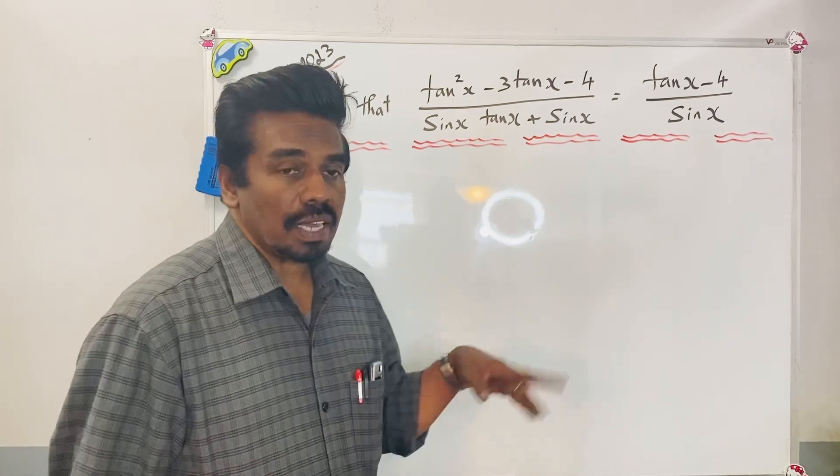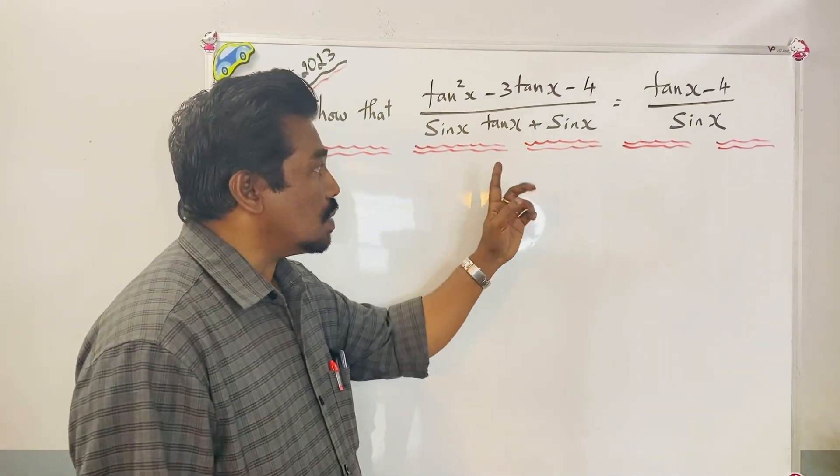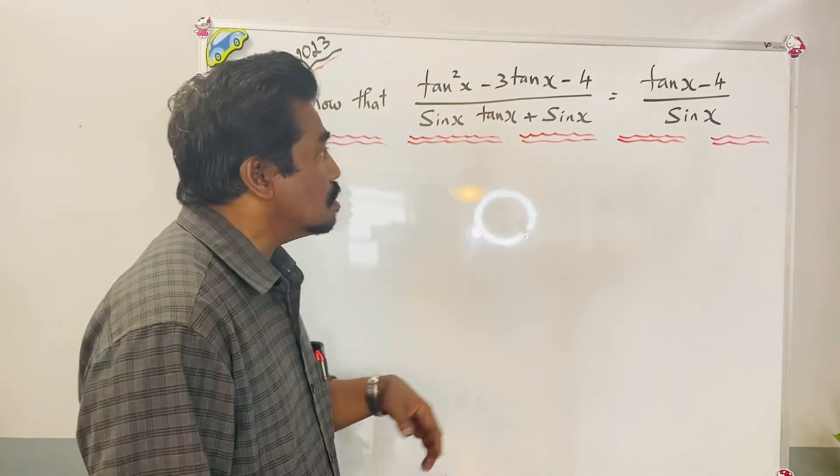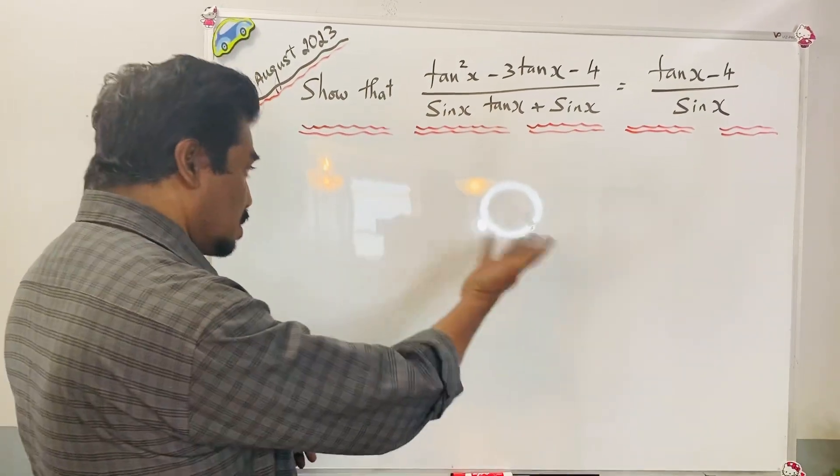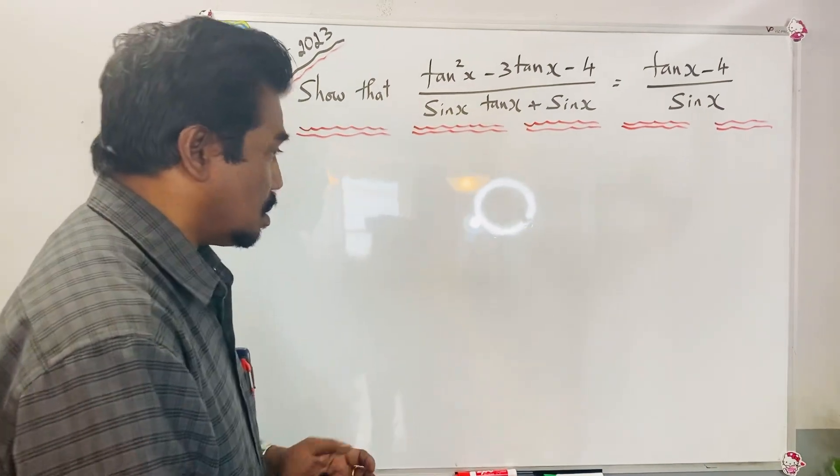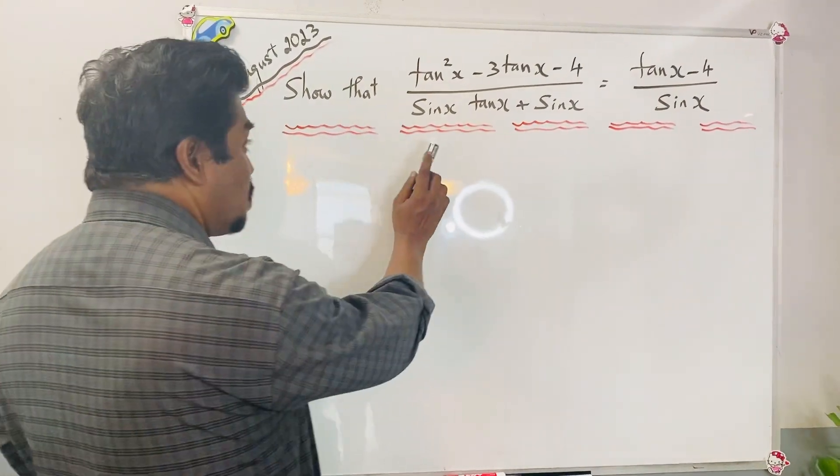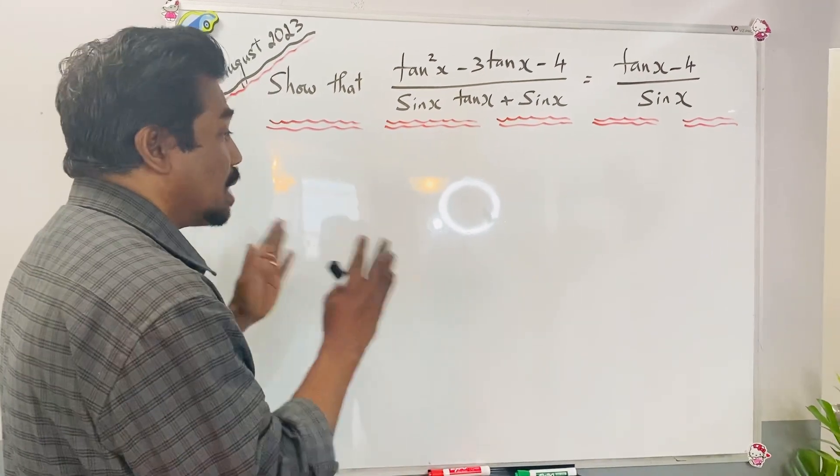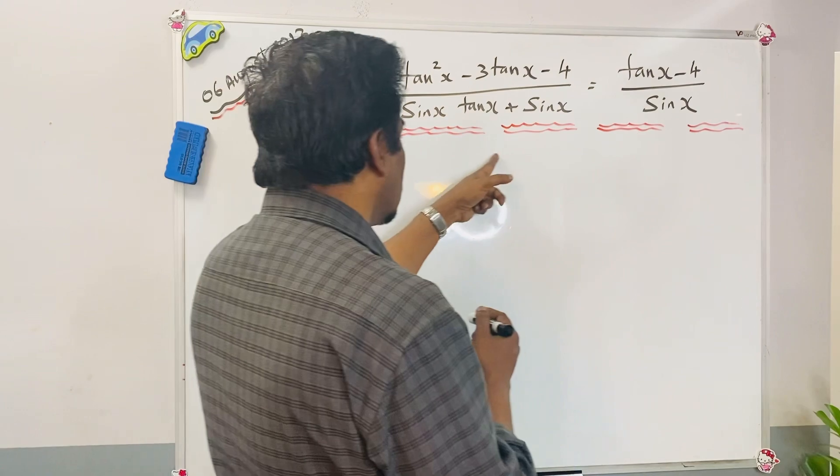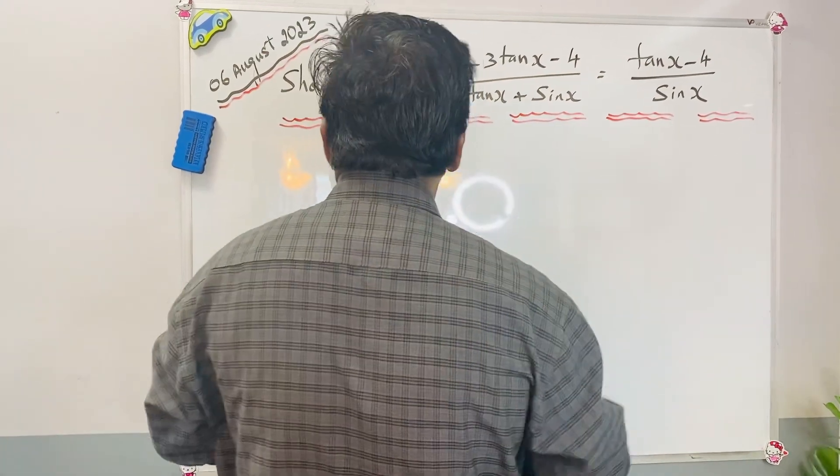In a trigonometric identity we have to show the given left hand side equation will be equal to the right hand side equation. We have to prove right hand side equal to left hand side, or left hand side equal to right hand side. Normally we will take the side which consists of many terms, so here the left hand side consists of many terms, so let us take the left hand side.